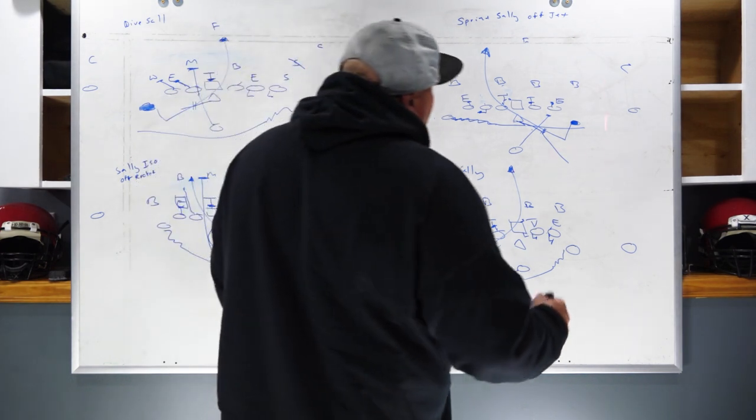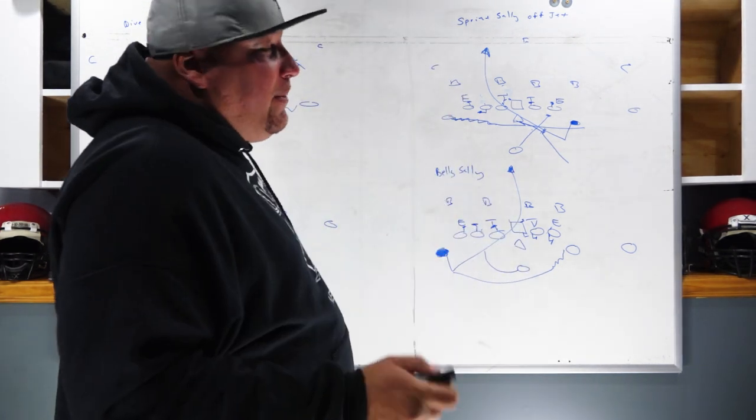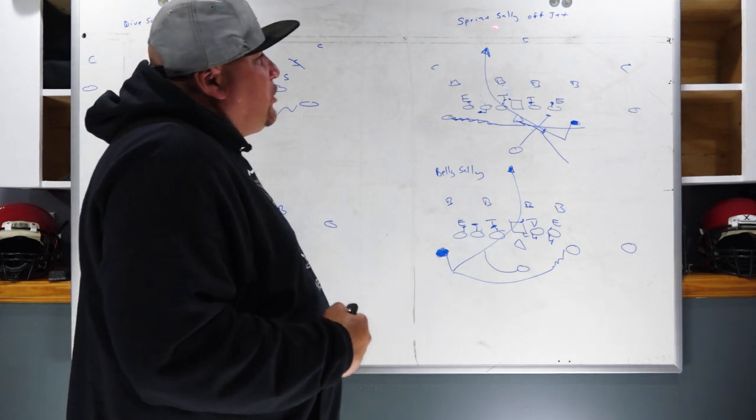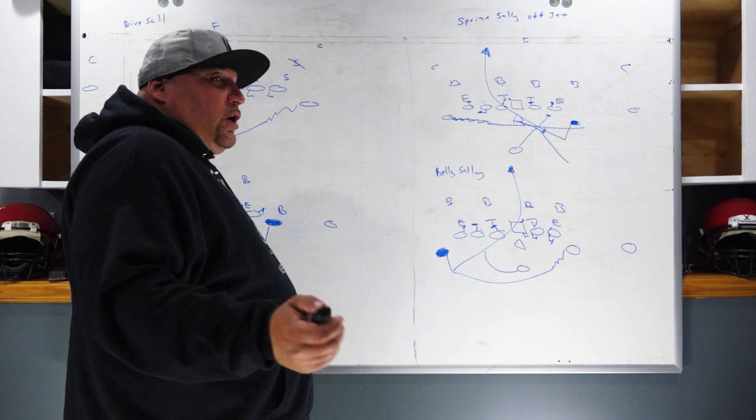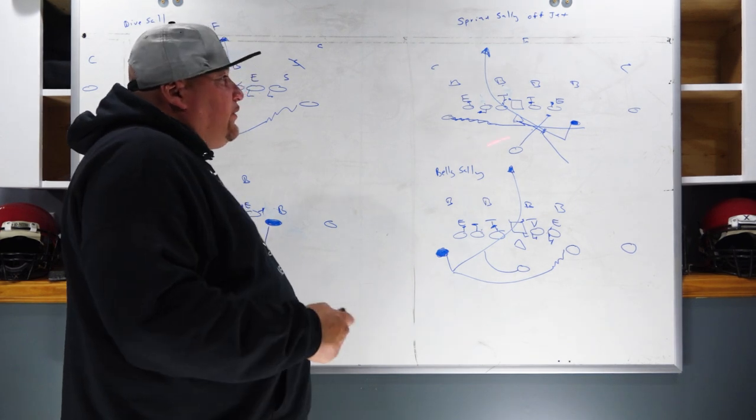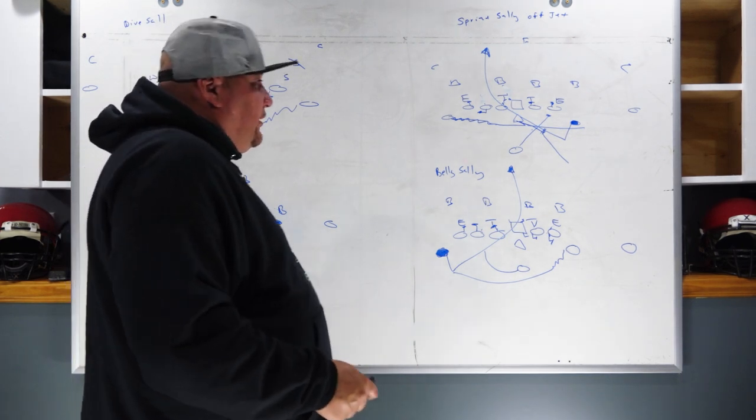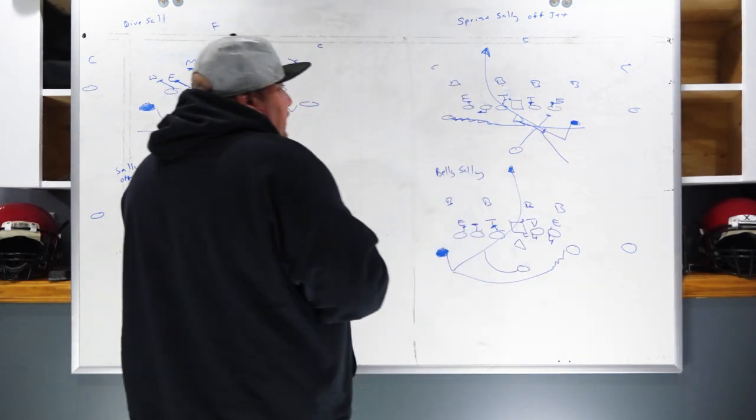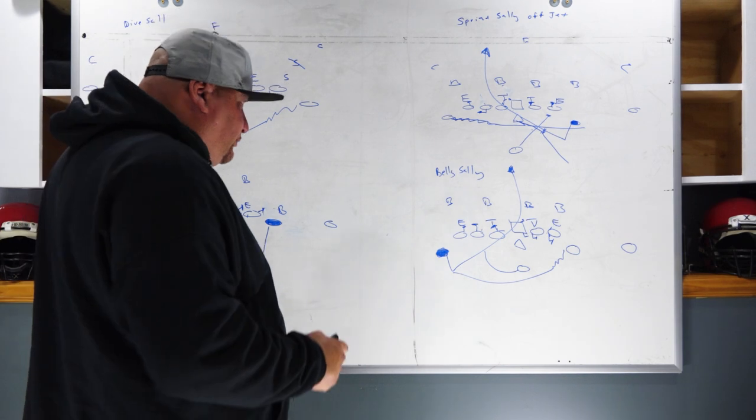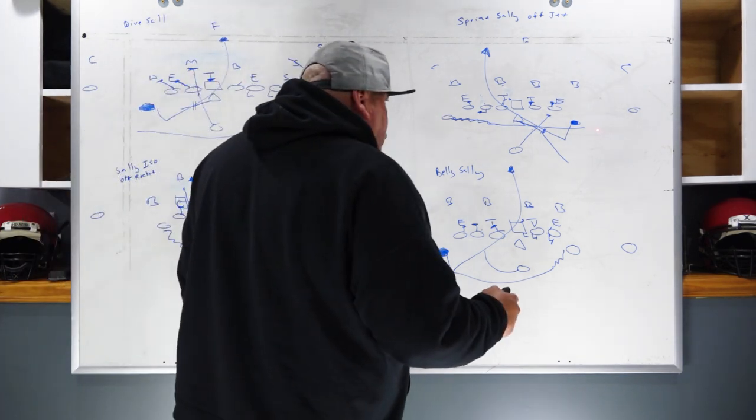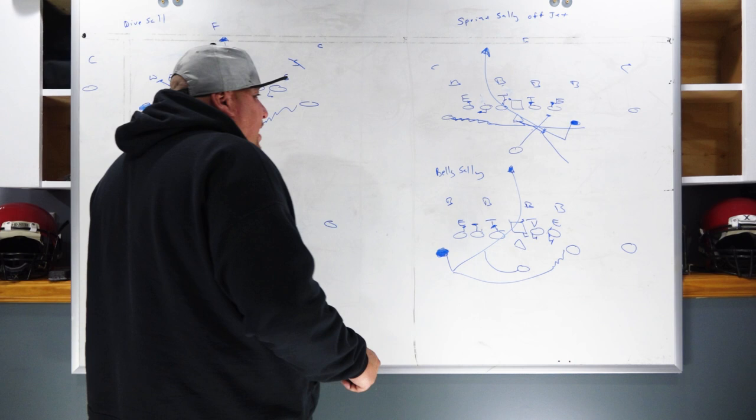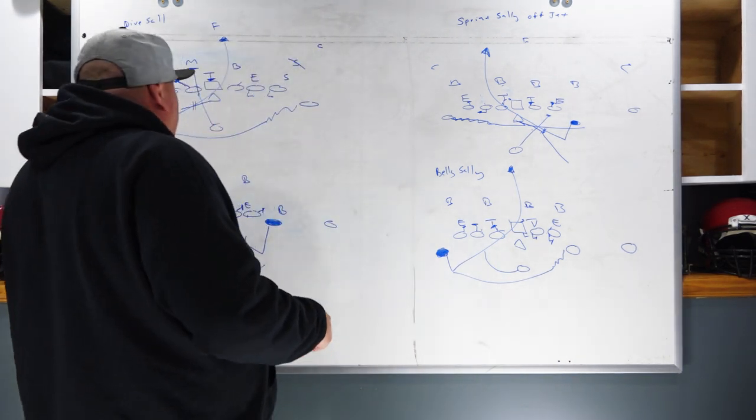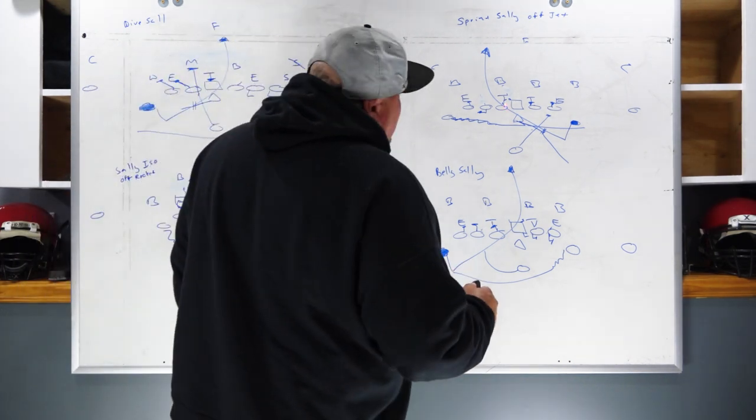The next one I used for years in Danbury. Actually here on my page you can see this version of Sally off of sprint, off our sprint action, off of jet motion. You can look on the YouTube page, look for the Sally play, and this is the one you're going to see. Once again on the backside we're firm, we're going to be very firm on the backside. We're going to get jet motion across to try to get some movement from these linebackers.